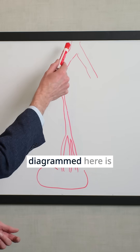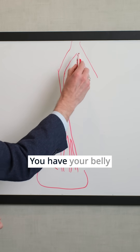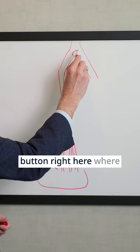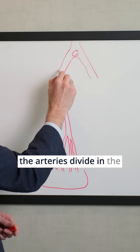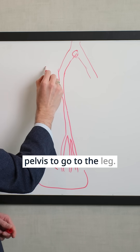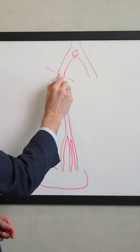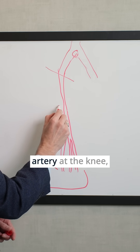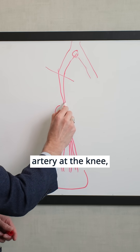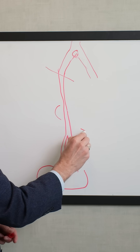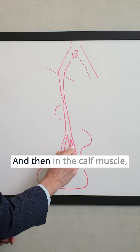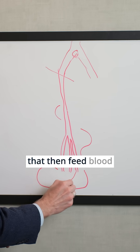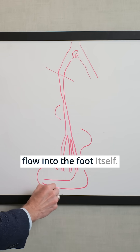What I have diagrammed here is the normal circulation. You have your belly button right here, where the arteries divide in the pelvis to go to the leg. At the groin, it becomes what's called the femoral artery. At the knee, the popliteal artery. And then in the calf muscle, we have the tibial arteries that then feed blood flow into the foot itself.